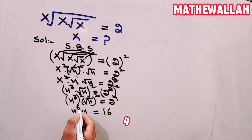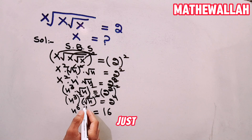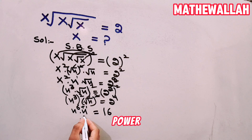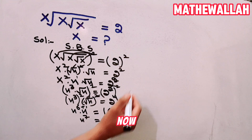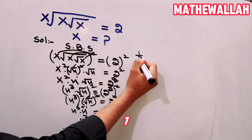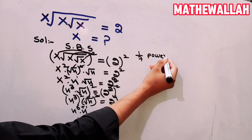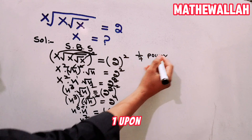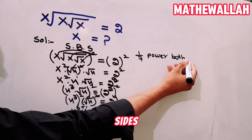Now x power 6 multiplied by x — we add the powers — so x power 7 is equal to 16. Now we multiply both sides by the 1 over 7 power.